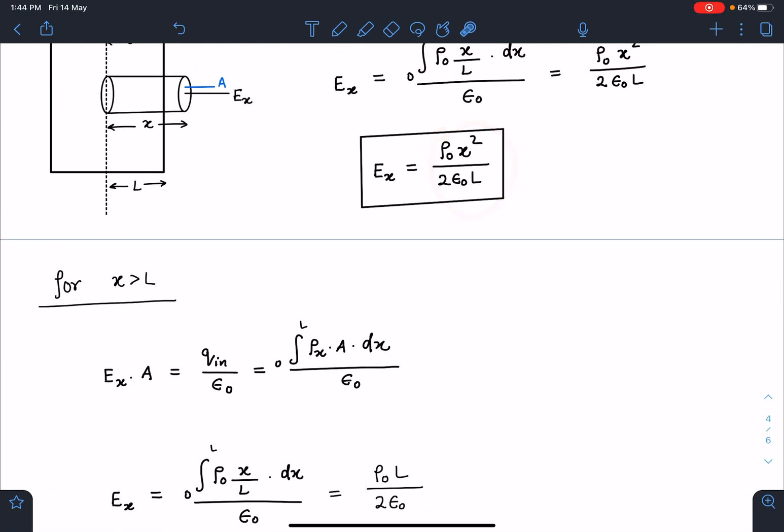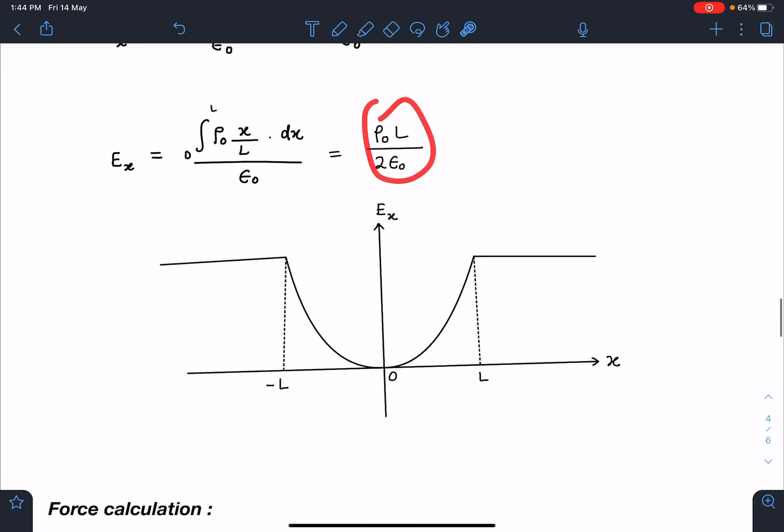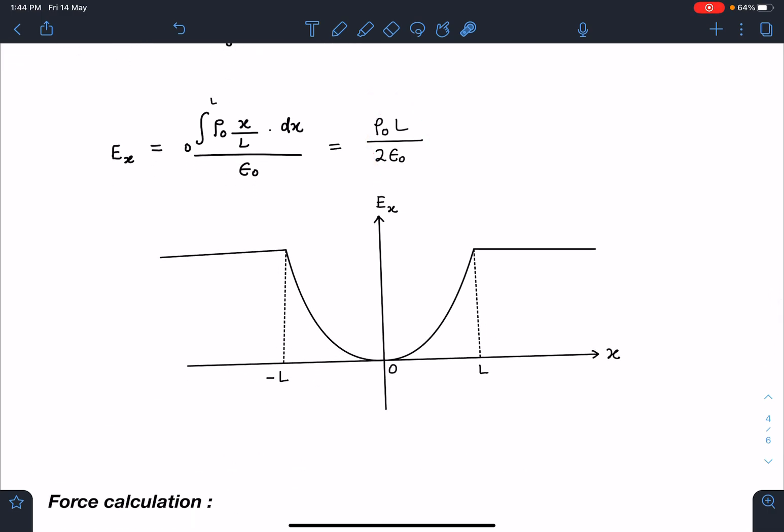If I substitute x = L here, I get ρ_0 L/(2ε_0). So to plot this graph, from 0 to L it's a parabolic function, and after that it becomes constant. The graph will be something like this, and a symmetrical graph will be present in the negative x as well.